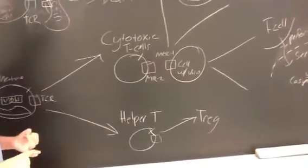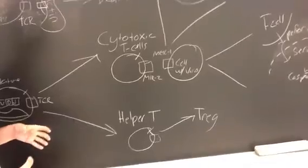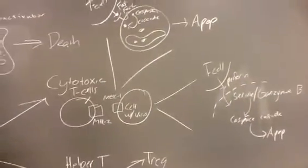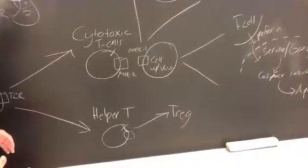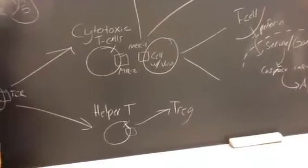You get cytotoxic T-cells, which go to regular cells and bind to MHC class I. Or you can have helper T-cells and T-regs that go to MHC class II.